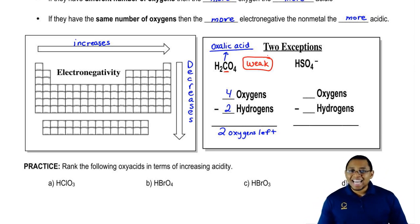So just remember oxalic acid is an exception to the rule we just learned. Now the second structure, when we do the math we get 4 minus 1 gives us three oxygens left.